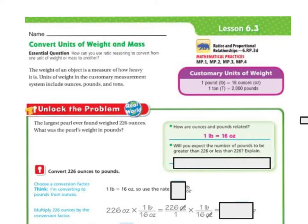Let's convert 226. Will you expect the number of pounds to be greater than 226 or less than 226? Well, I think it's going to be less than, because if every 16 ounces is only going to be one pound and we're talking 226. So let's convert now.